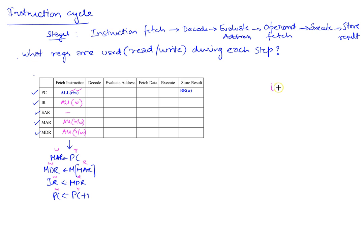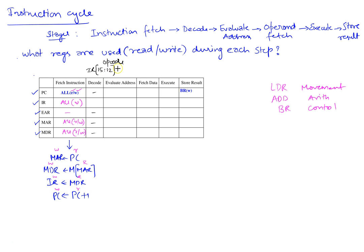In this example, let's look at LDR, ADD, a branch instruction, and see what happens in each case. During the decode step, nothing happens with the PC or the other registers — all it does is read instruction register bits 15 through 12, because that's where the opcode is. So all instructions involve a read of the instruction register during decode.